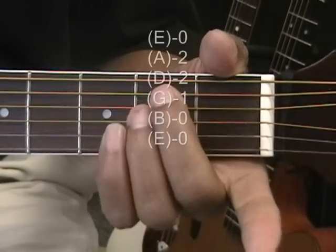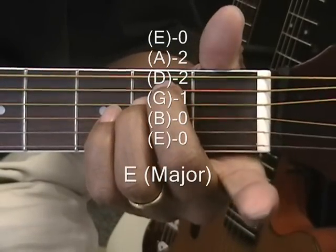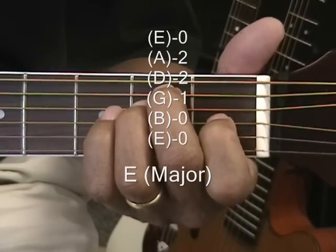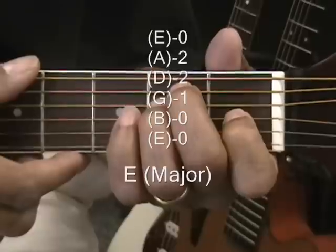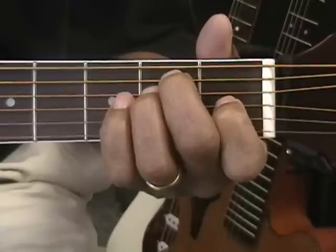We're taking our middle and ring finger, placing them on the A and D string at the second fret, and then we're going to take our first finger and place it on the G string at the first fret, and we're going to strum all the strings. That's E major.